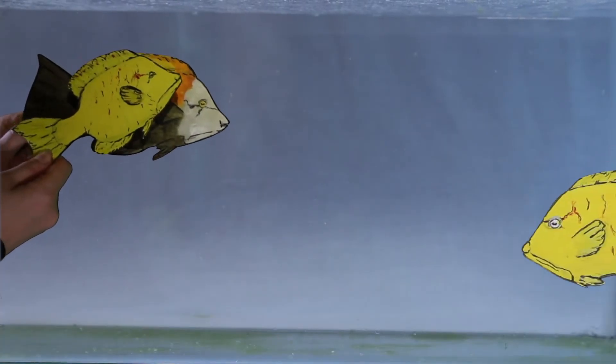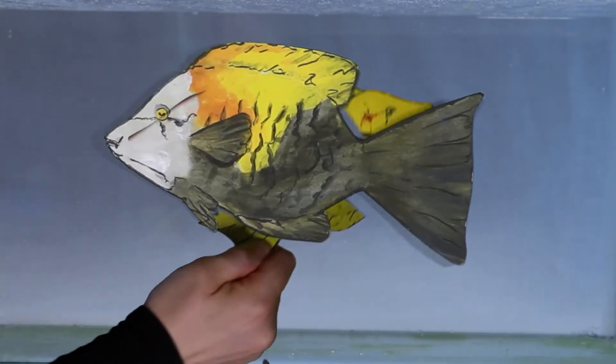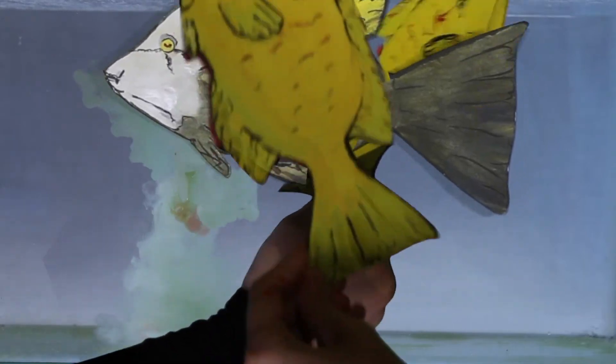A female will even become male if they get big enough so they can get freaky with as many fish as possible to produce as many babies as possible. This is called protogynous hermaphroditism.